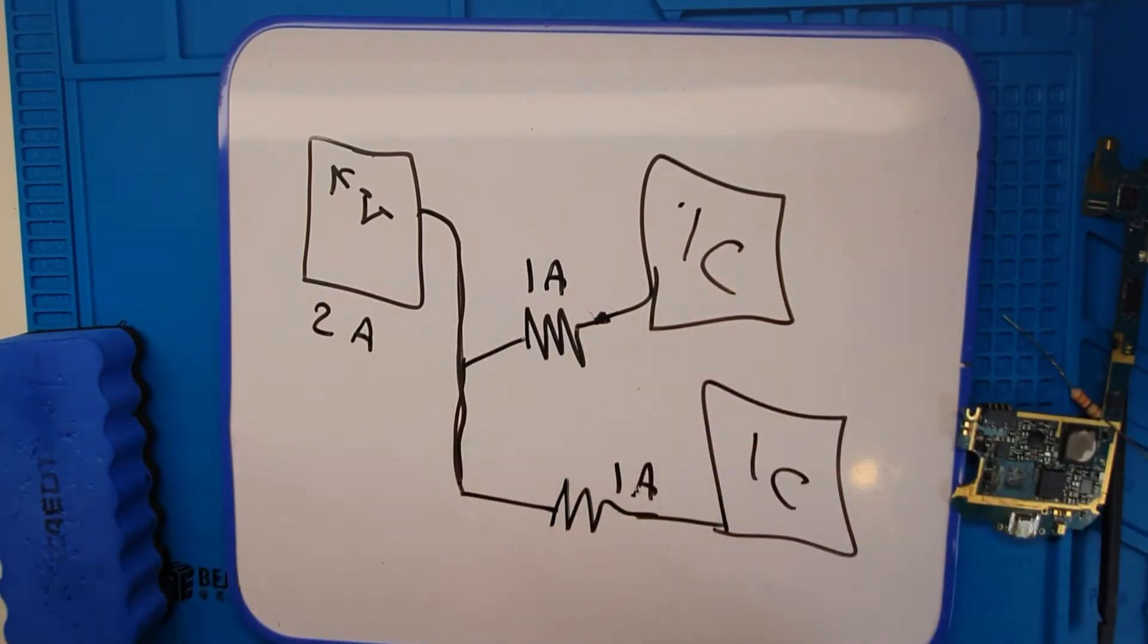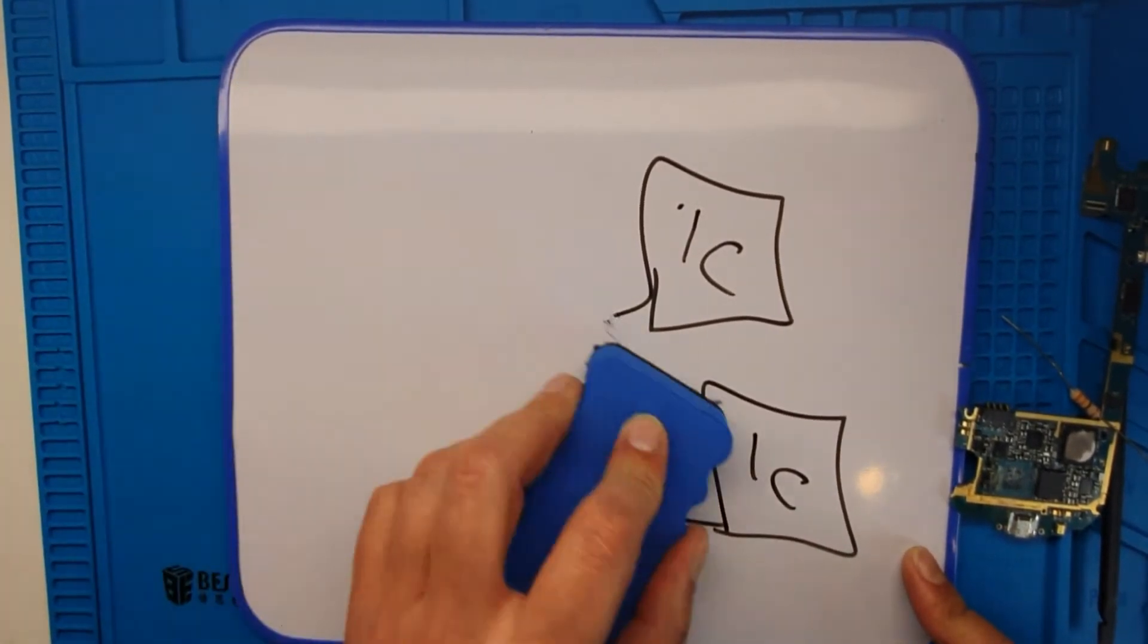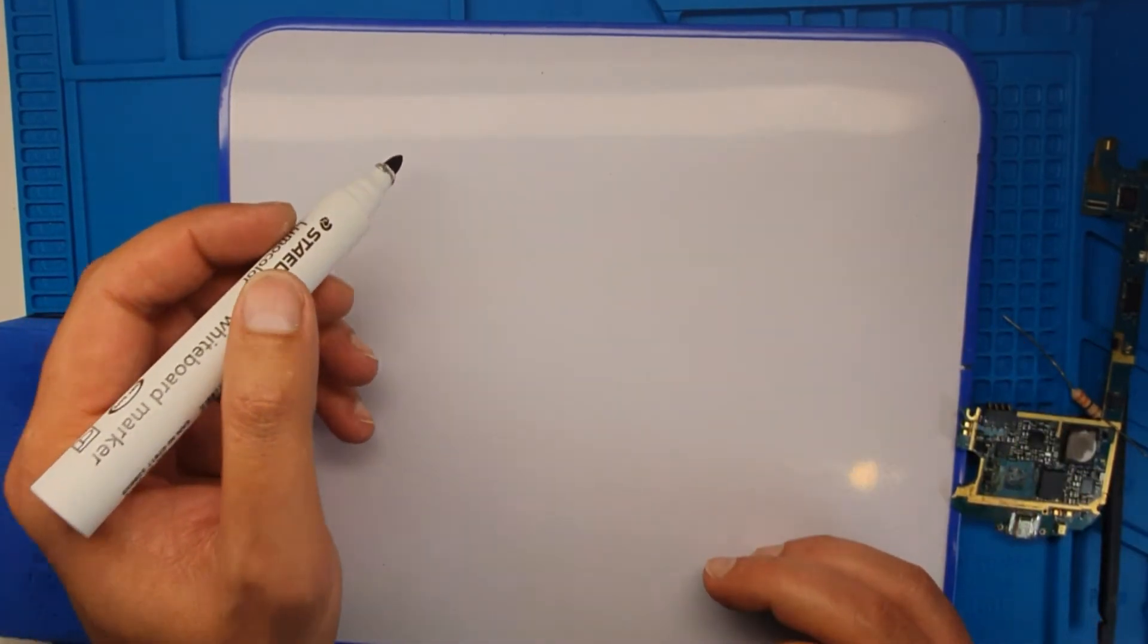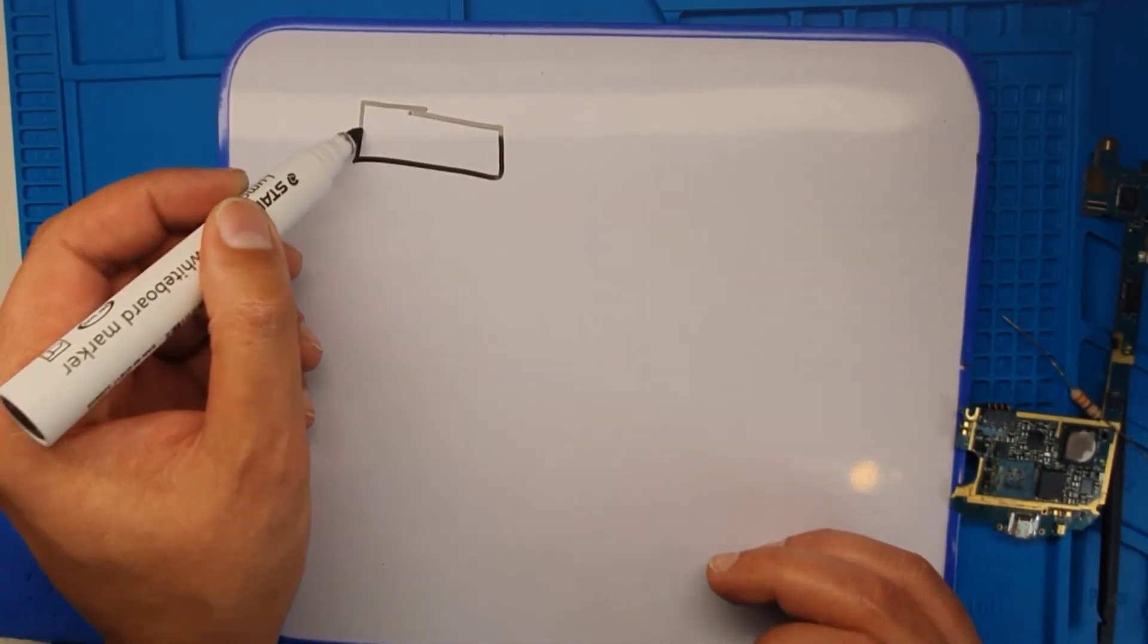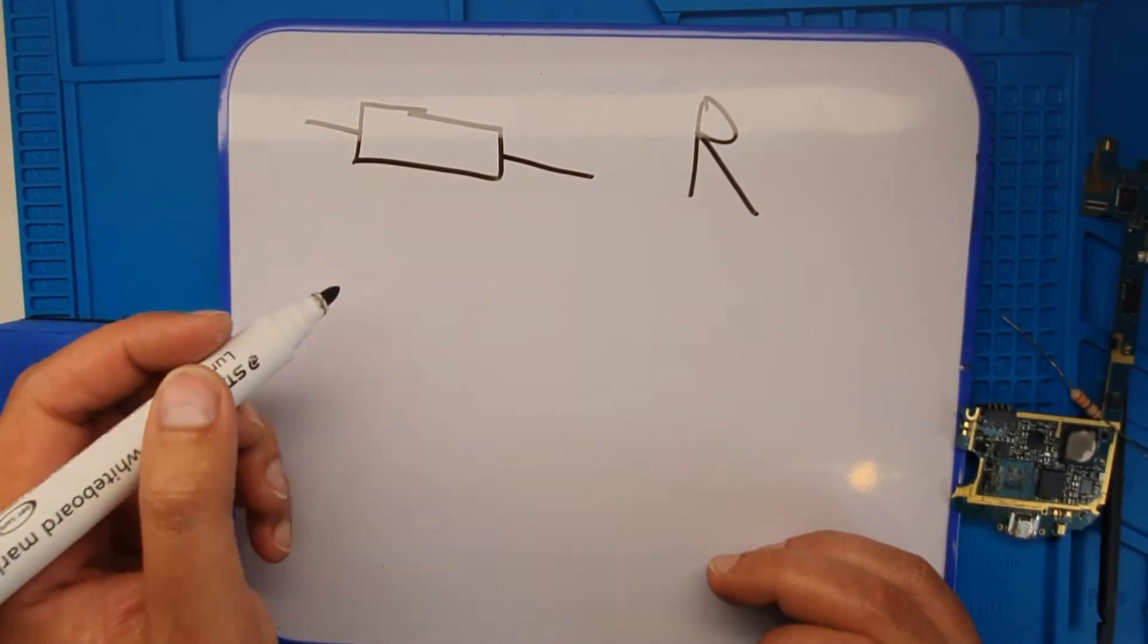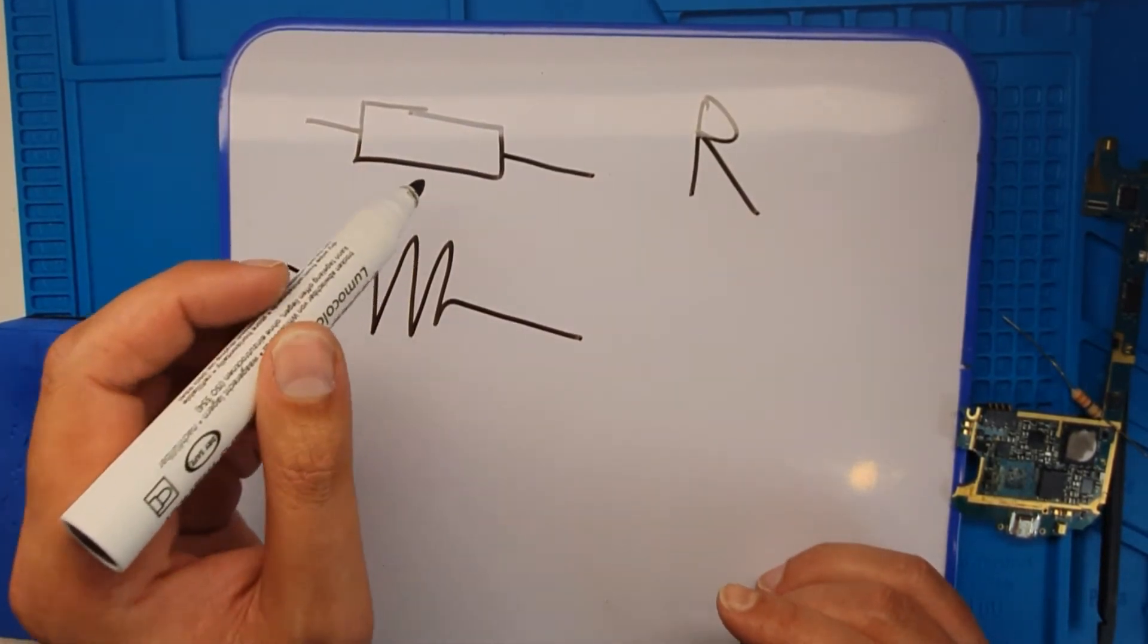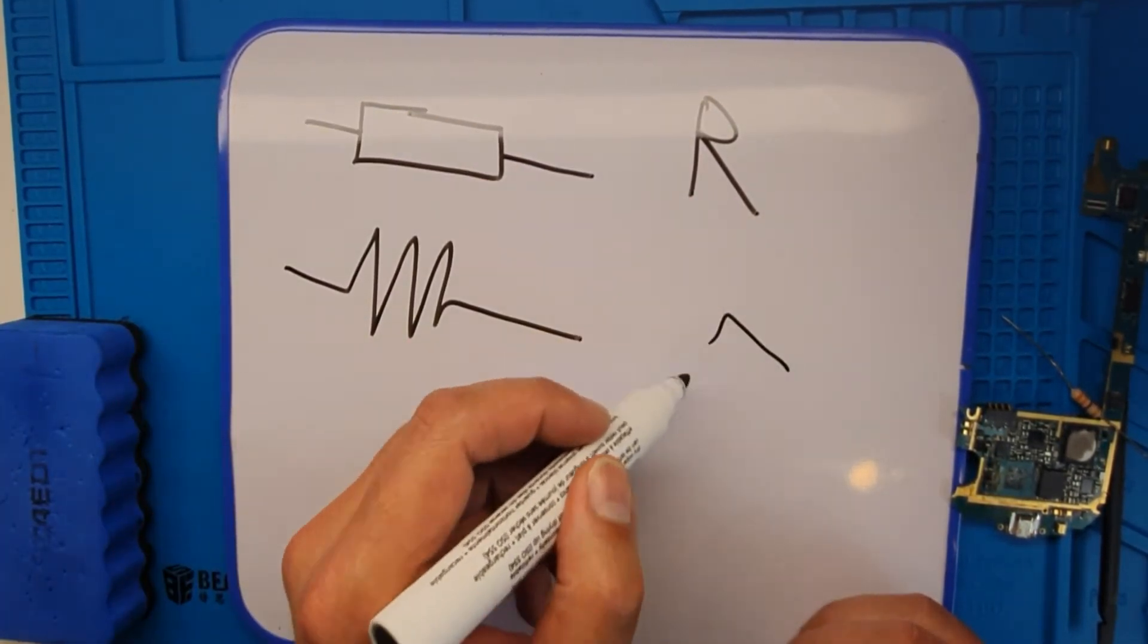Now I'll talk about the symbol. If you see on the circuit board or multimeter, this is the first symbol. On the circuit board, a capital R is written. If you see these three symbols, you know in the schematic diagram this part is the resistor.